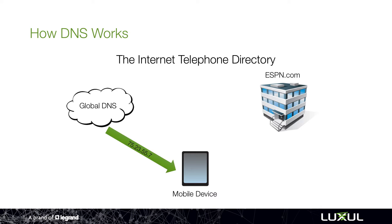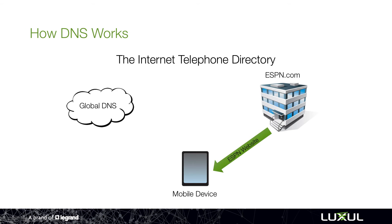The device then says, yes, I understand what to do with this because I understand numbers. And now it goes out and says I'm going to go to that IP address, and at that point gets to ESPN.com. ESPN.com recognizes that request and says, I understand this language of numbers and so I'm going to send you back the website. That's how DNS works.